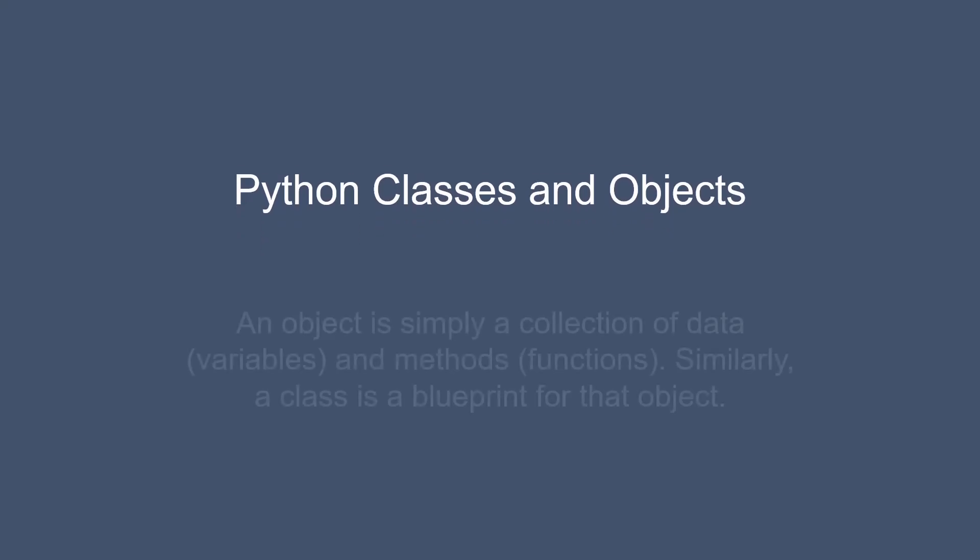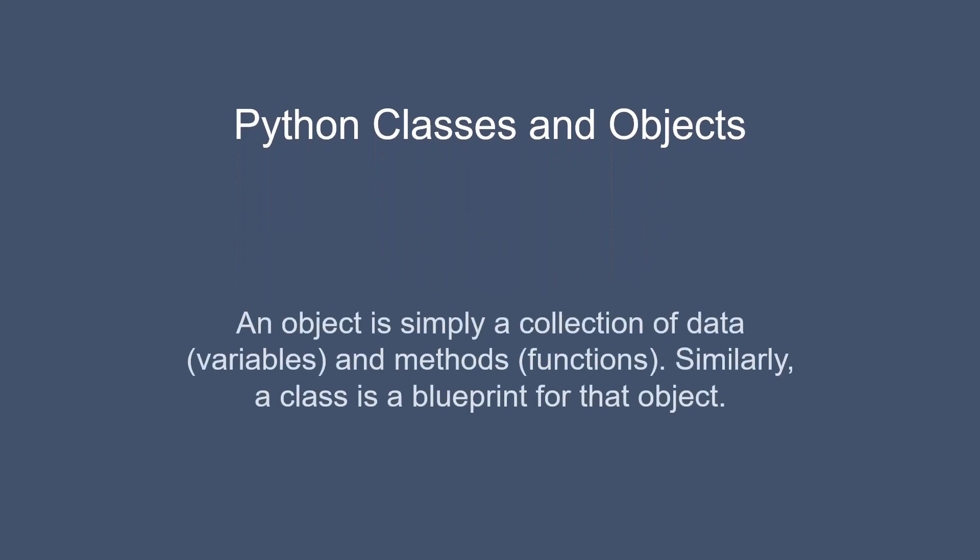An object is simply a collection of data, variables, and methods — functions. Similarly, a class is a blueprint for that object.